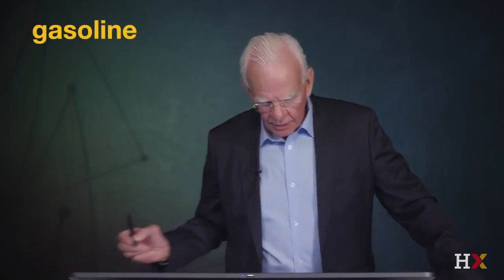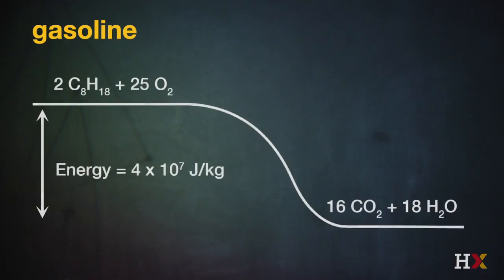We can diagram this energy release by recognizing that a molecule of gasoline reacts with oxygen to produce carbon dioxide and water. We need to balance the number of carbon atoms on the left and right-hand side of the reaction, as well as hydrogen and oxygen. And we know, because we can burn gasoline, that energy is released when that carbon-hydrogen structure and oxygen are converted to CO₂ and water.